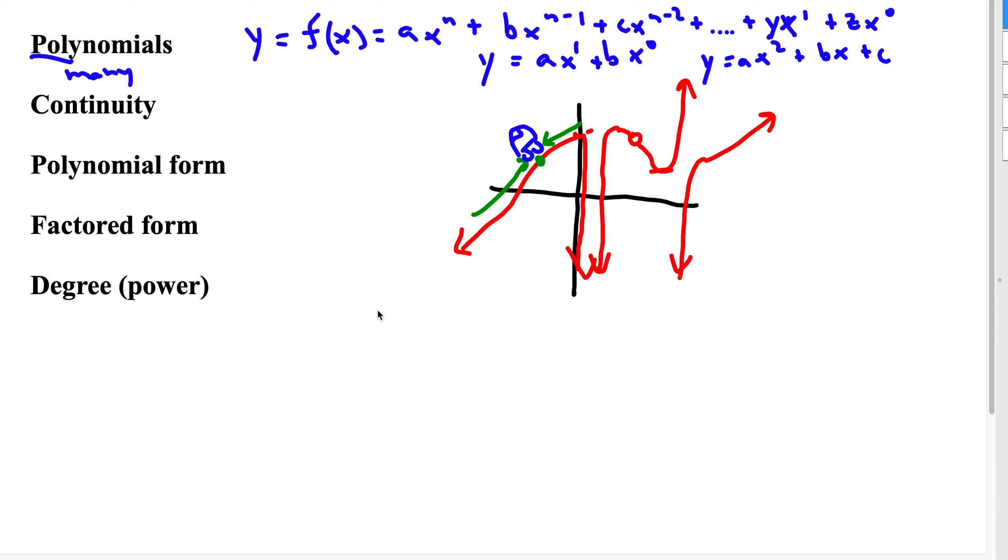Polynomial form is of the form ax to the n plus bx to the n minus 1 plus cx to the n minus 2, and so on. Standard polynomial form. Factored form has to do with, you guessed it, factors. It could be of the form ax minus m. The only difference is you might have more than one. Polynomials could have powers that are higher. On that note, we define the degree or power of a polynomial, and we pretty much exclusively use the term degree as the highest power of the polynomial.